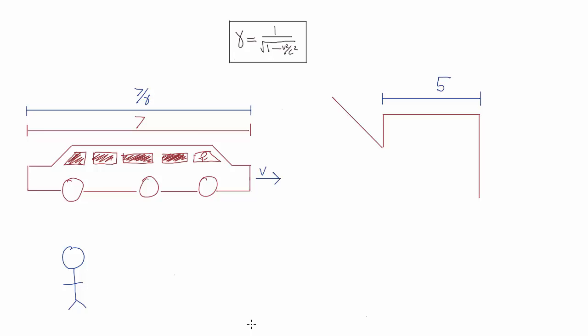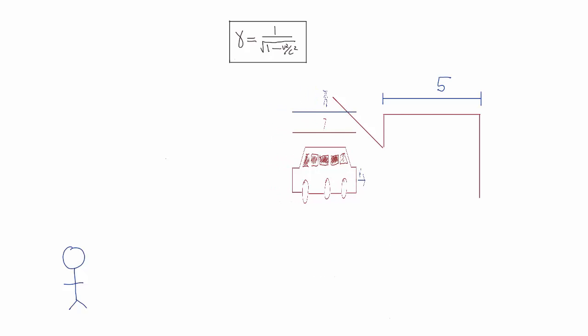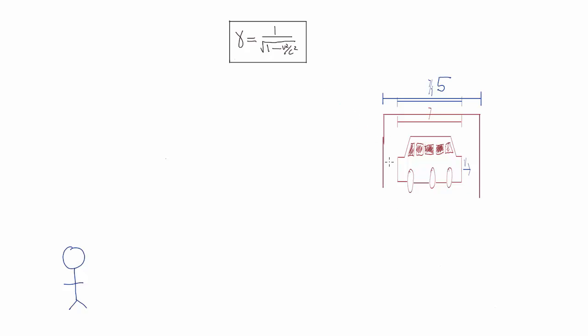Now, if Alice is driving fast enough, she will become length contracted in Bob's frame to a length shorter than the garage, allowing her to fit inside. Now, just as she drives inside, Bob can slam the door shut, and Alice's seven-meter-long limo will have fit perfectly inside Bob's five-meter-long garage.